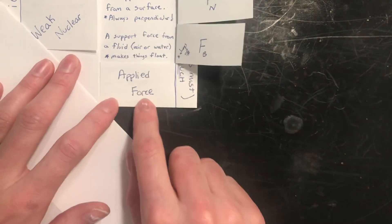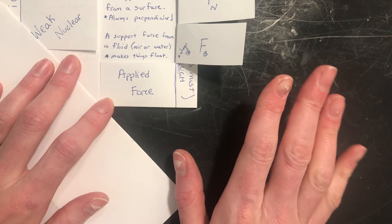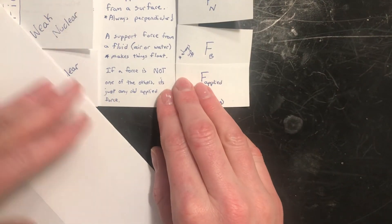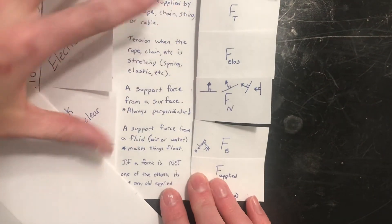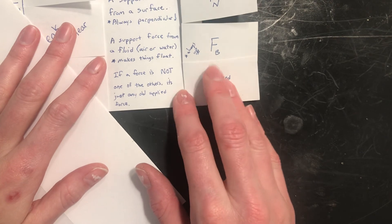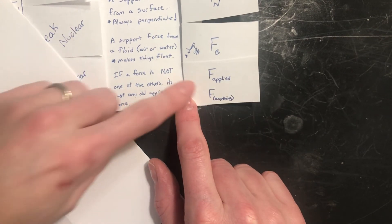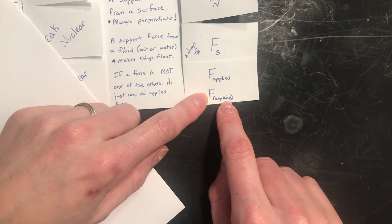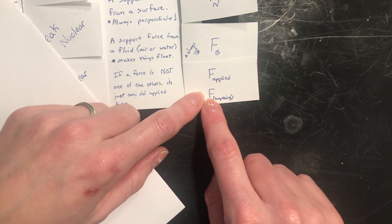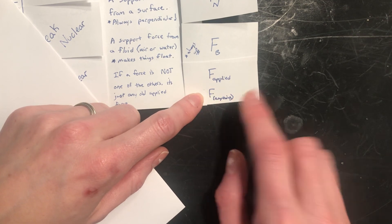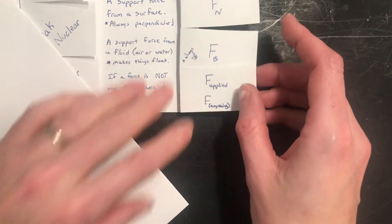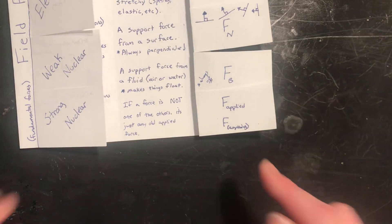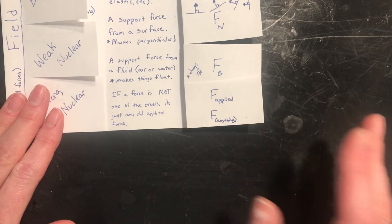Now applied force is down here at the end, because it's the last thing you should write down, it's the last thing that you should consider. If it's not one of these other forces, any one of these other forces, if it's not something else on this chart, then it's just any old applied force. You could write applied, or you could write F something else. Maybe it's a dog pulling on something, so you could write F dog. Maybe it's your friend pushing on you, so you could write F friend. You could put anything there. If it is something specific, then you could write down one of these things, and if it is something else, you could write F applied, or F something specific.